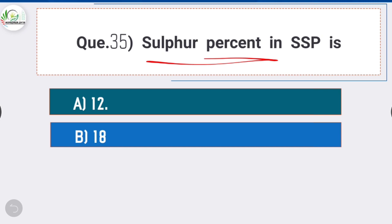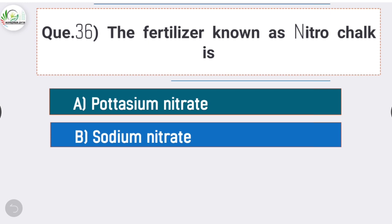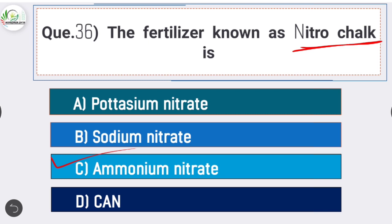Question number thirty-five: sulphur percent in SSP is - answer is option A - 12%. 12% of sulphur is present in SSP. Question number thirty-six: the fertilizer known as Nitro Chalk is - Ammonium Nitrate. Question number thirty-seven: redness in apple is due to - answer is option A - anthocyanin. Redness in apple is due to anthocyanin.